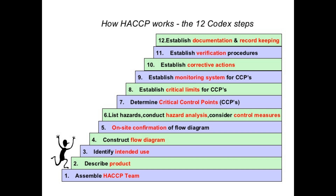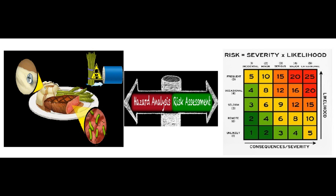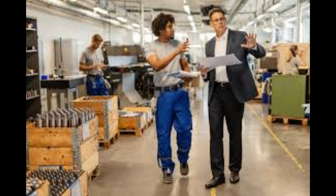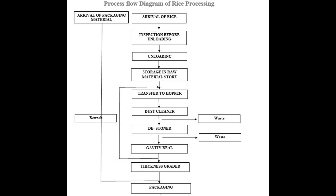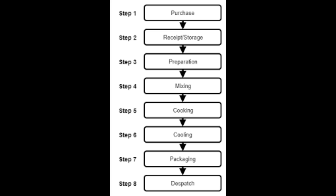The fifth step is on-site confirmation and verification of the accuracy of the process flow diagram. This is important because the process flow diagram is the base of hazard analysis and risk assessment starting from step 6. If the flow diagram is not correct, you will not be able to conduct proper hazard analysis. It has been observed that current production practices often don't exactly match what is mentioned in the process flow diagram, so activities must be aligned with it, and the food safety team must confirm its accuracy.